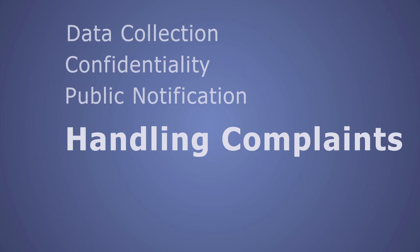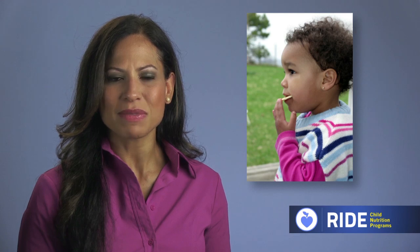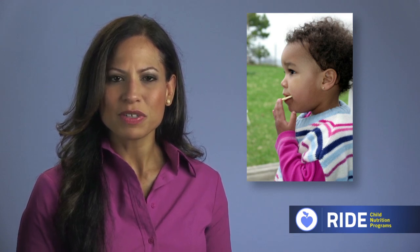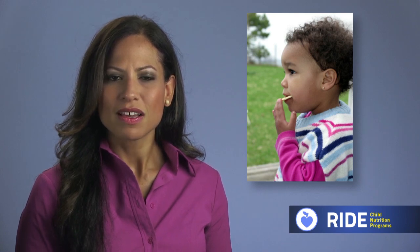All sponsors must have procedures in place for recording and handling civil rights complaints. Any person alleging discrimination in the food program based on the protected classes previously identified has the right to file a complaint within 180 days of the alleged discriminatory action. Complaints may be written or verbal. Anonymous complaints should be handled as any other complaint. Each organization needs to have a system in place to record and document any complaints. Sponsors must notify RIDE of a civil rights complaint immediately, as all complaints must be forwarded to USDA's Regional Office. A sample form and a written policy are available in the training printouts.